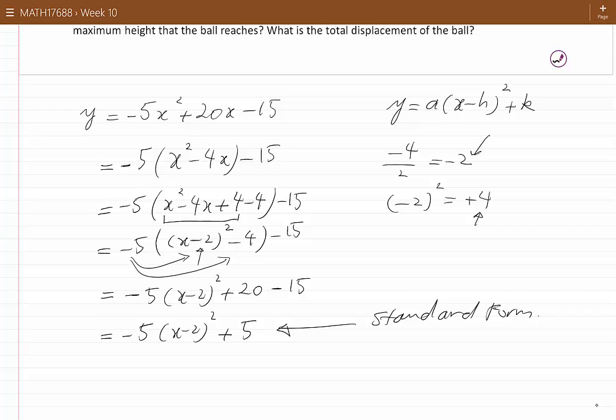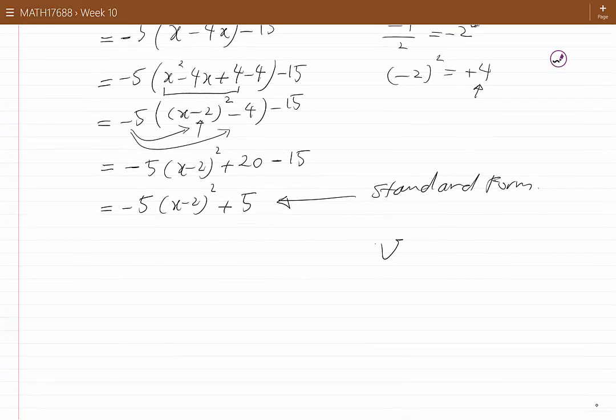The vertex is found this way. What is the value of x which will turn the quadratic term, that is (x minus 2) squared, into 0? That is x equal to 2. And once we plug this into the equation, the value of 2 for x, we see that y becomes 5. 2 and 5 are the vertex coordinates in this example.